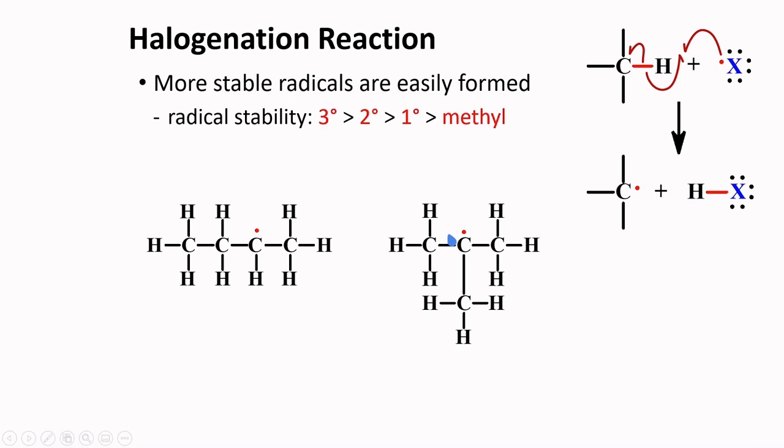This is not to say that the primary radicals will not form, but they will be in lower proportion. These radicals are stabilized by several factors such as hyperconjugation, resonance, and electron donating groups. These carbon radicals are considered electron deficient centers, and surrounding groups that will be able to donate electrons are beneficial to the stability of these radicals. These factors will be described later in more detail as we move forward in this course.